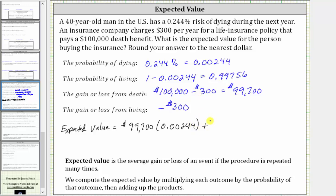And then plus the other outcome is a loss of $300 times the probability of losing $300, which is the probability of living, which is 0.99756.